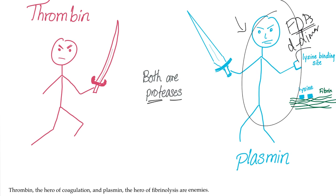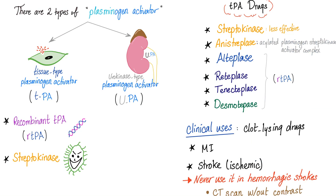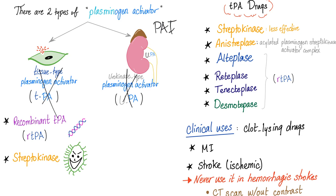How does plasmin identify fibrin? Thanks to the lysine binding site, because there is a lysine on the fibrin. As mentioned in previous videos, there are two types of plasminogen activators: tissue type or TPA, and urokinase type or UPA. Both are plasminogen activators, and that's why the topic of today is plasminogen activator inhibitor, which is going to inhibit both of these.